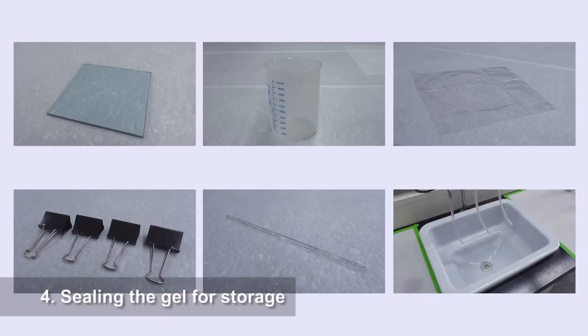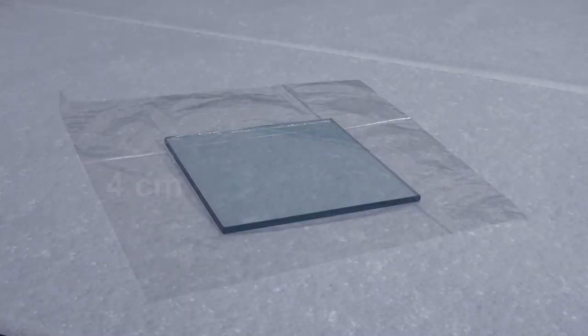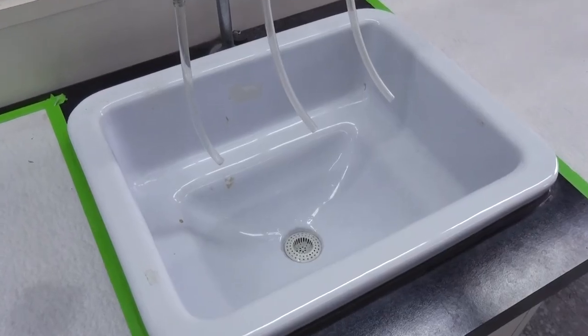Sealing the gel for storage. The equipment needed to seal a gel for long-term storage include a thick glass plate, a platform, two pieces of clear food wrap four centimeters wider than the glass plate on each side, at least four binder clips, a glass rod, and a sink with a tap.